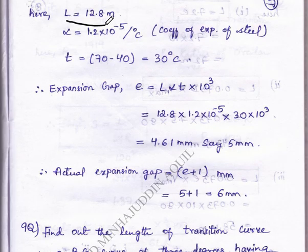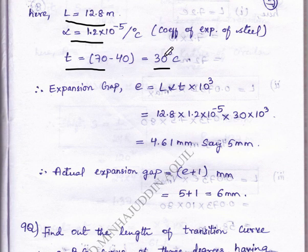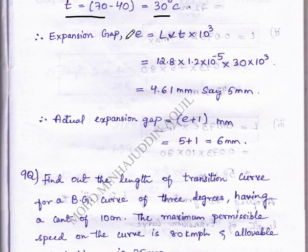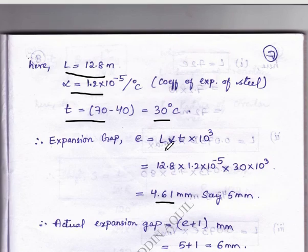Substituting the values: L equals 12.8 meters, α equals 1.2 into 10 power minus 5 per degree centigrade, and t equals 70 minus 40 equals 30 degrees centigrade. Substituting all these values into the formula E equals L·α·t·10³, we get 4.61 mm, which is approximately equal to 5 mm. Therefore the actual expansion gap is e plus 1, which is 5 plus 1 equal to 6 mm.